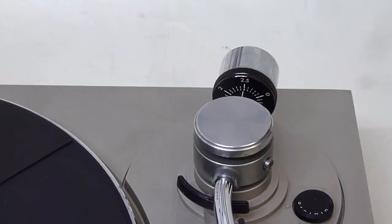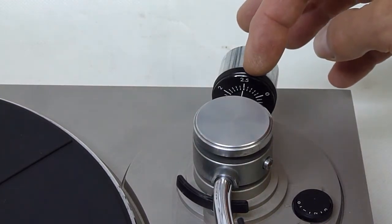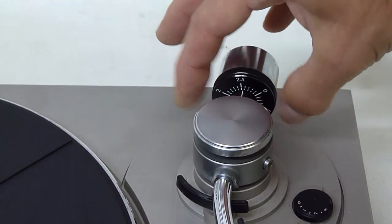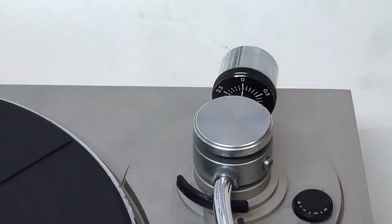Now that the arm has been balanced we take the gauge here which currently says 2.5 and we just turn this disk at the front to zero. So now it's balanced and set to zero.